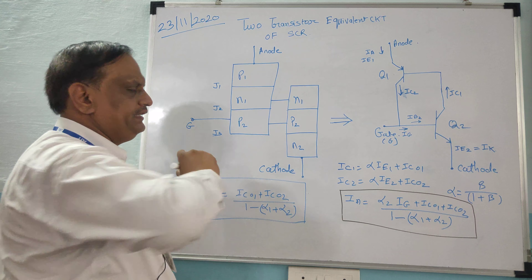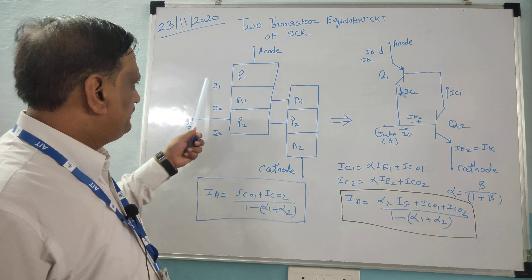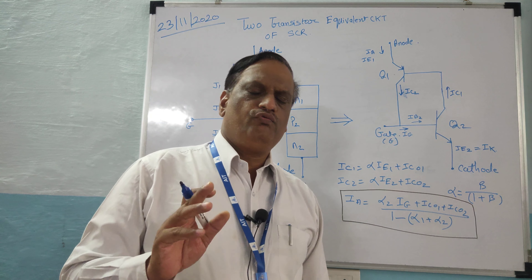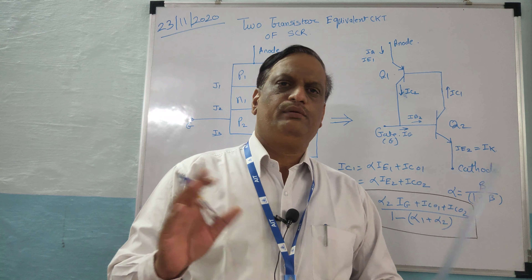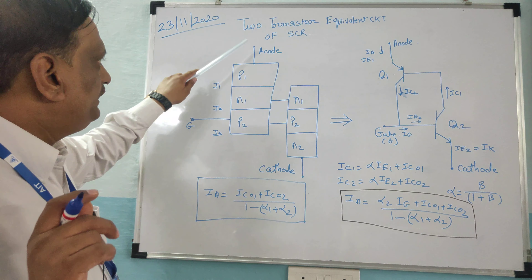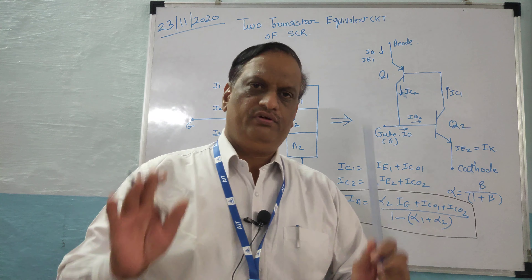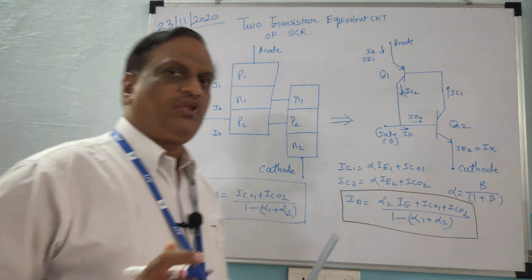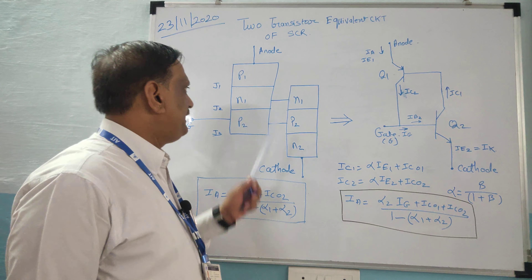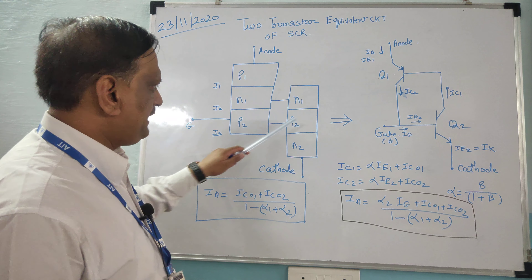The SCR has a gate terminal, and it is a three-terminal, four-layer, three-junction semiconductor device. Importantly, SCR is a unidirectional device. A unidirectional device conducts in only one direction — current flows only from anode to cathode and will not flow from cathode to anode. In transistor terms, the SCR is divided into two parts: a combination of a PNP device and an NPN device.